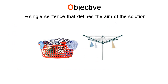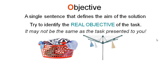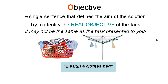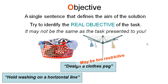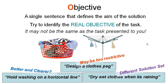Let's look at how we define an objective in more detail. We're after a single sentence that defines the aim of our solution. We want to identify the real objective of the task, because sometimes people may tell you to do something but their actual objective isn't quite what they've stated. For example, someone might tell us to design a clothes peg — that could be an objective, but perhaps it's too restrictive. A better way might be to say 'hold washing on a horizontal line.' Or if the real objective is to dry wet clothes while it is raining, we'd come up with a very different solution set and a peg outside might not be suitable — we'd be thinking about things like electric tumble dryers.